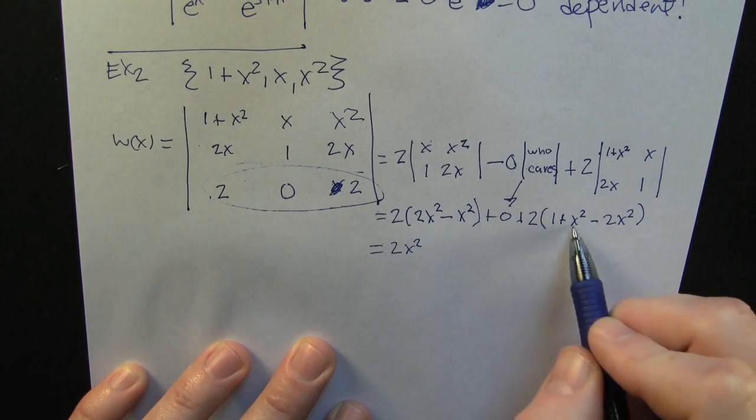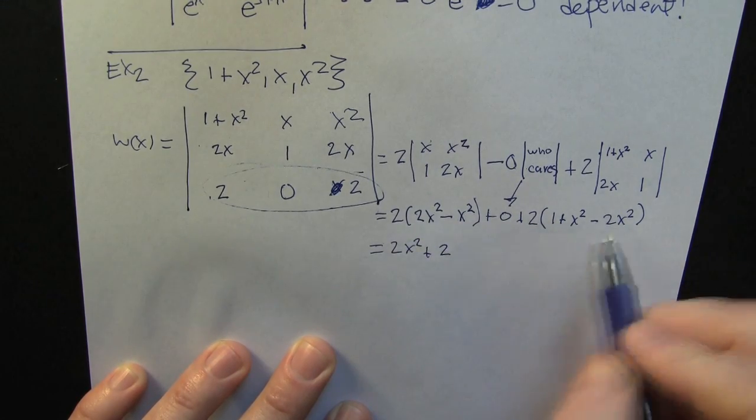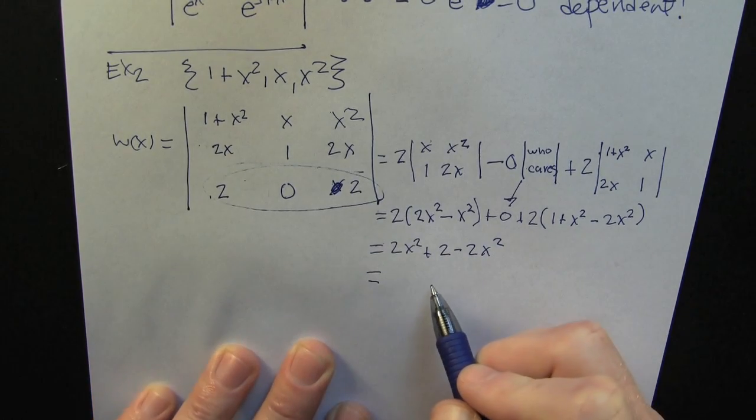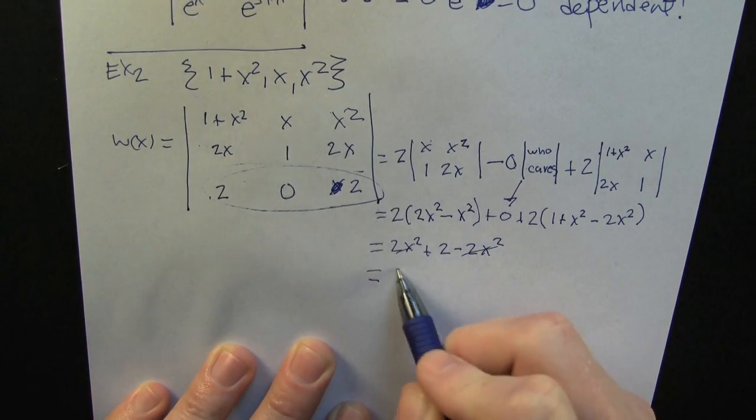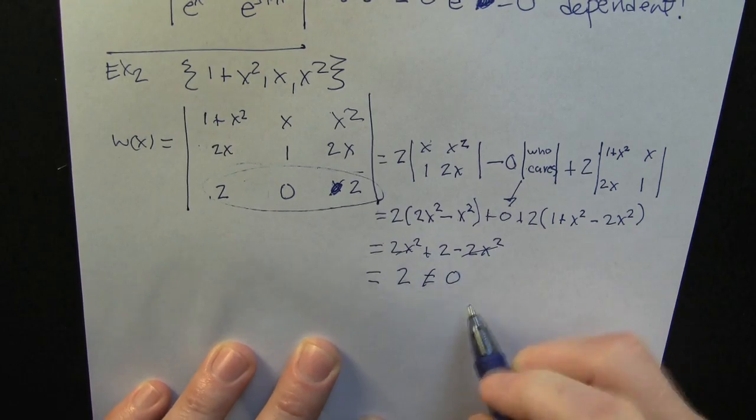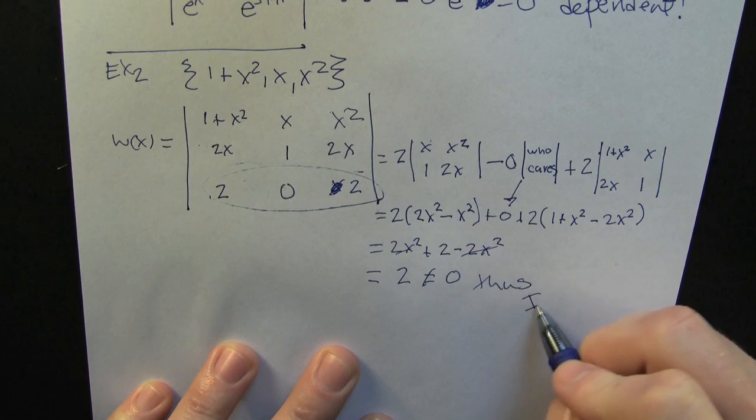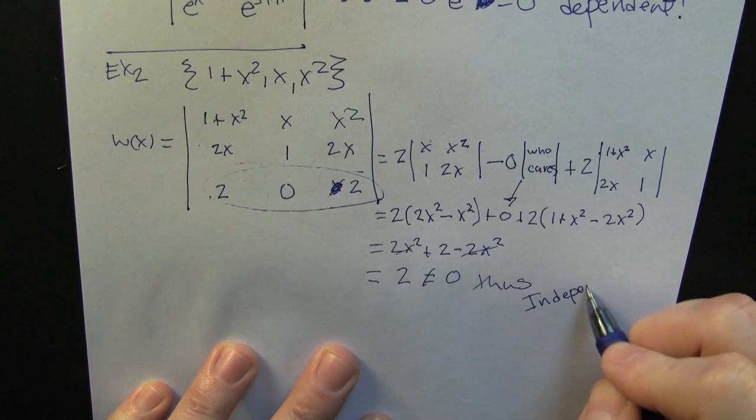It appears to me that after I do all that, I got 2x squared minus... oh, plus 2, and minus 2x squared. Finish him. 2. Not 0. I-N-D-E-P-E-N-D-E-N-T.